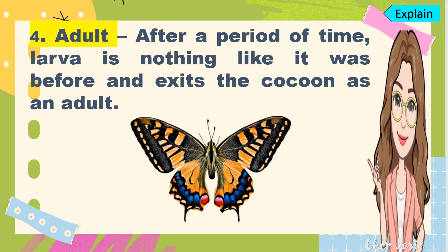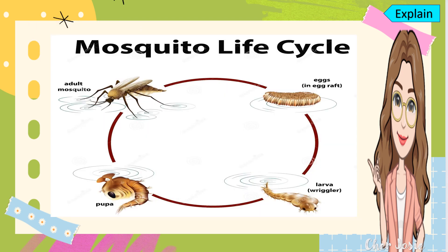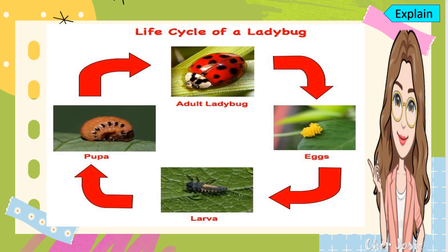The fourth stage is the adult. After a period of time, the larva exits the cocoon as an adult, looking nothing like it was before. Here is also the life cycle of a mosquito: it begins with an egg, then larvae or the wriggler, then pupa, and it becomes an adult mosquito. Next example is the life cycle of a ladybug — it also has four stages: eggs, larvae, pupa, and adult ladybug.